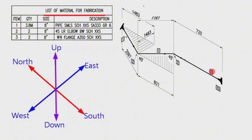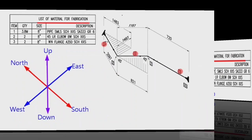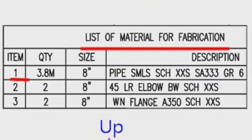Detail number 1 shows pipe, used in several places in the pipe drawing. Detail number 1: 3.8 meters length, 8 inches pipe, seamless, schedule is XXS, SA3333 grade 6.